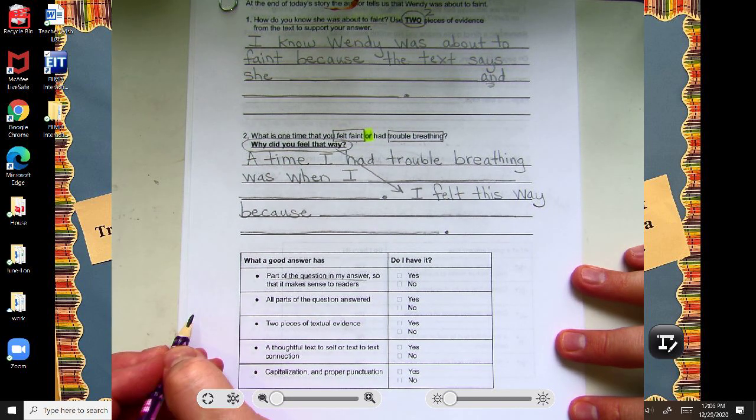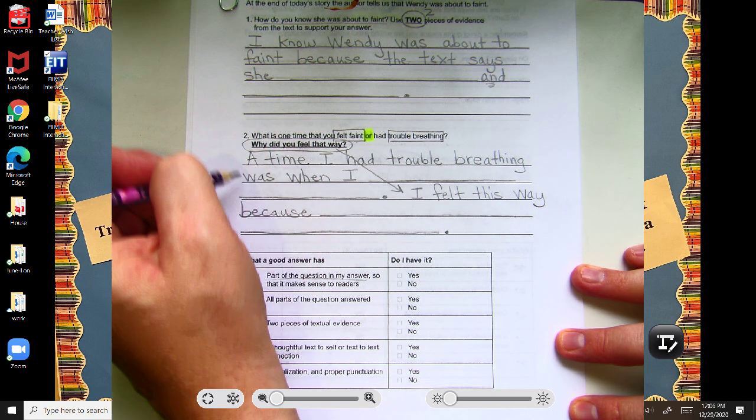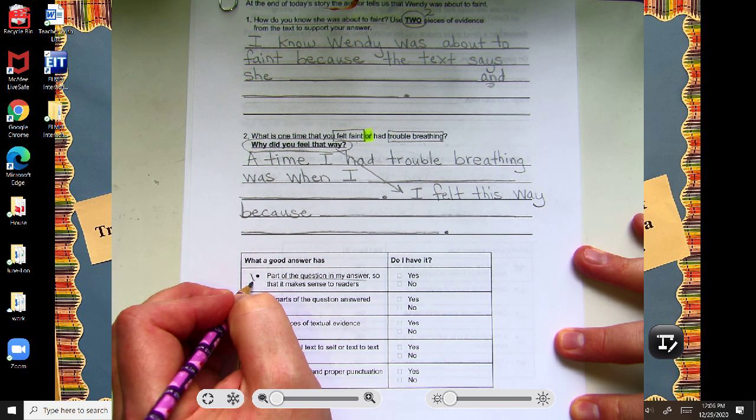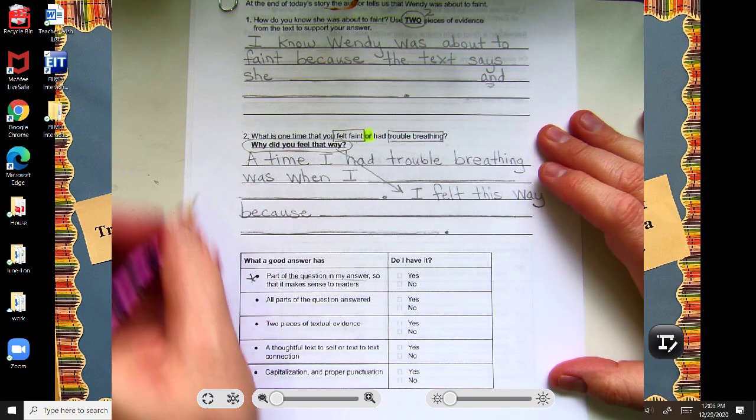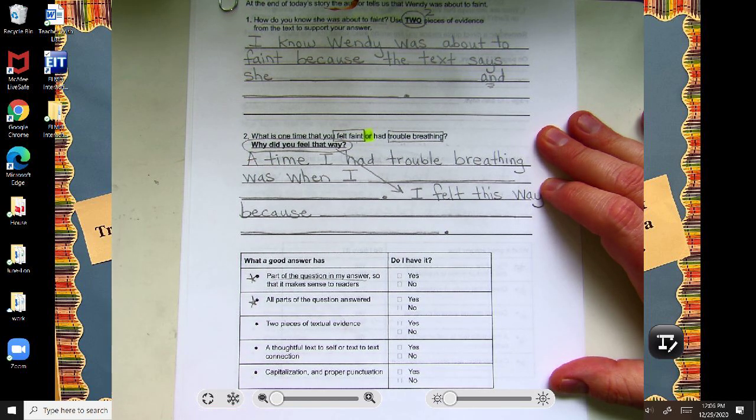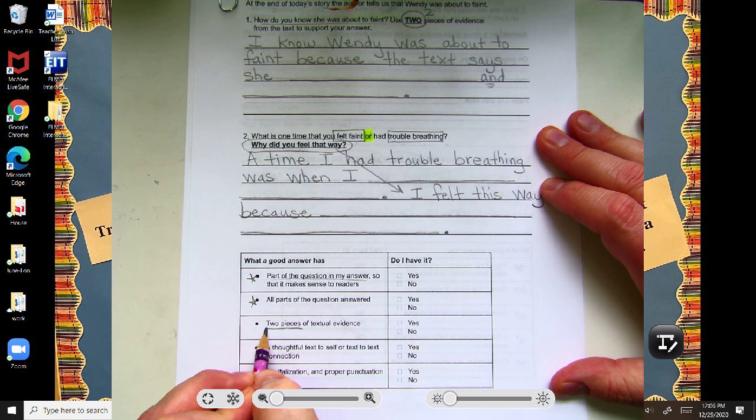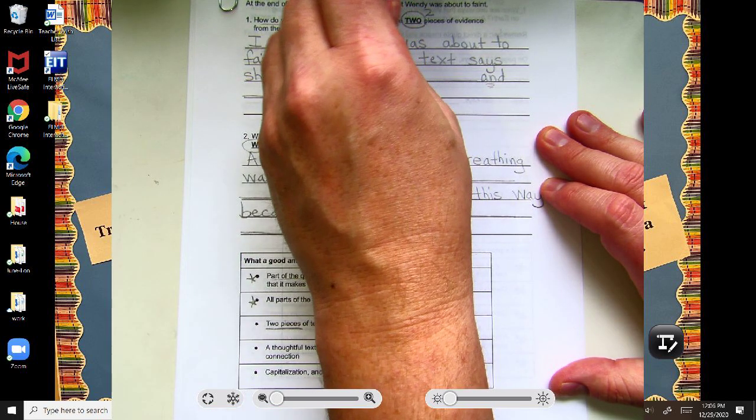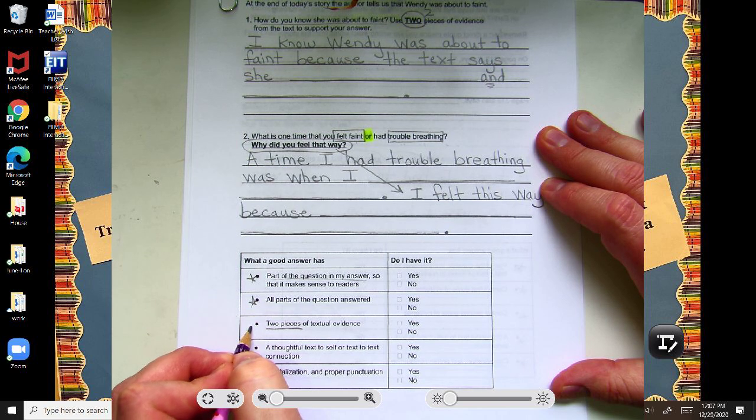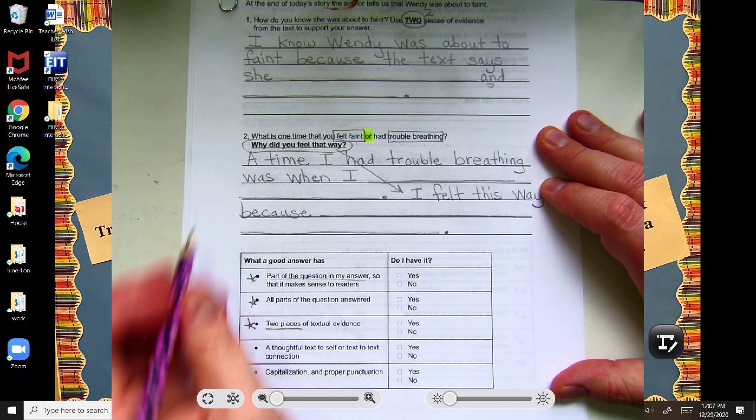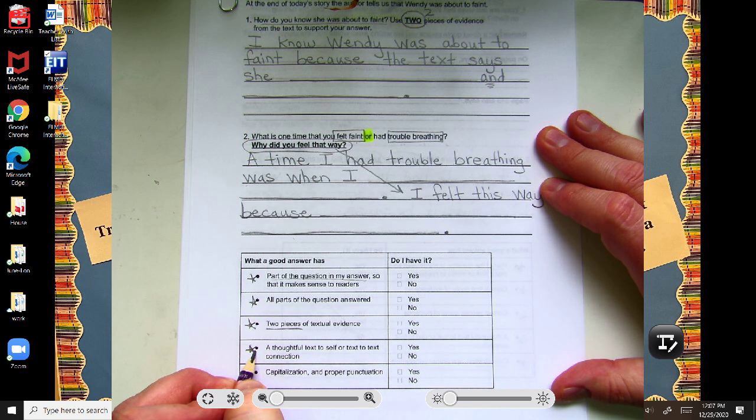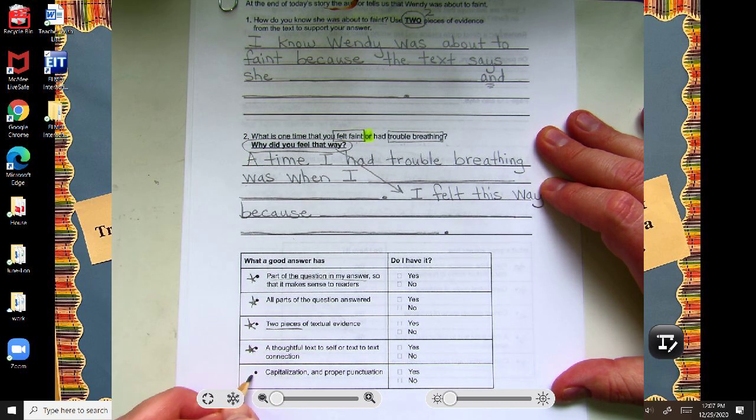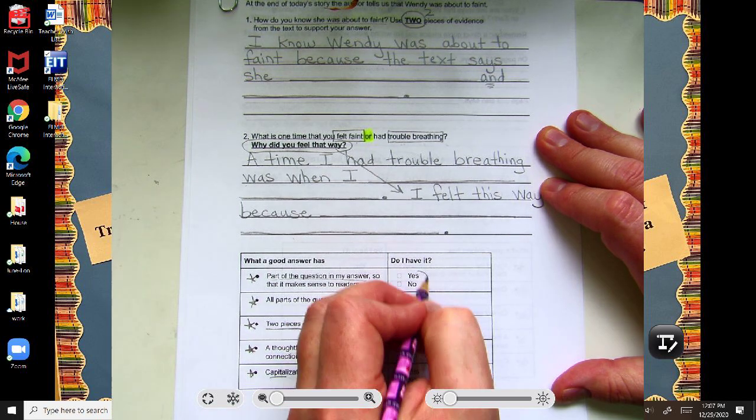So, again, if we look at our rubric, if we start both of them this way or something similar, that's going to give us words from the question in the answer. If you answer one and two, then you've answered all parts. If you give two pieces of evidence up here, two things you read that told you she's feeling faint, you're going to get a point for that. Your connection here to when you felt faint, or had trouble breathing, is going to give you a point here. And then, if you remember to capitalize and punctuate, that's going to give you a point, for a total of five points.